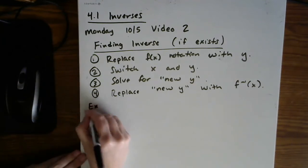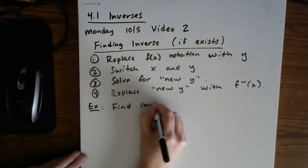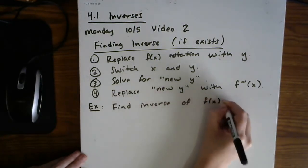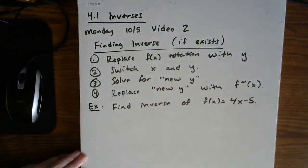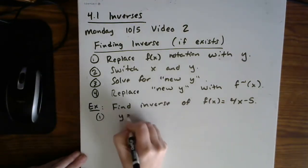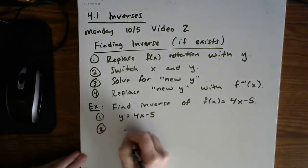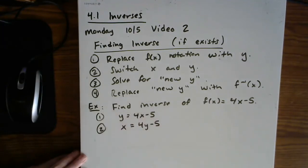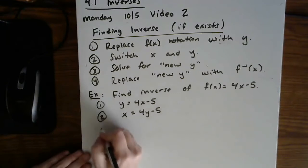Let's just look at an example. Let's find the inverse of f of x equals 4x minus 5. So step one, get out of function notation and replace it with y. Step two, switch x and y. So literally just switch them.